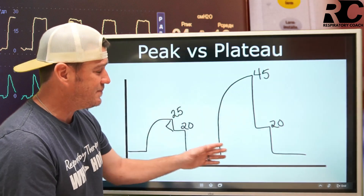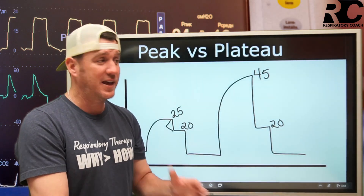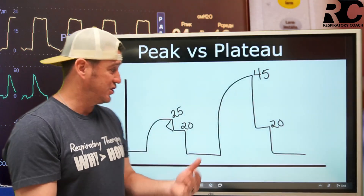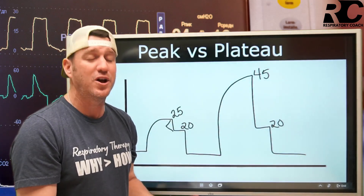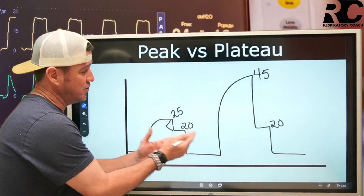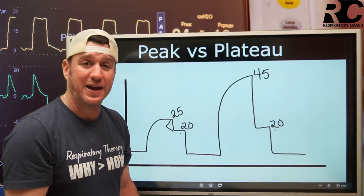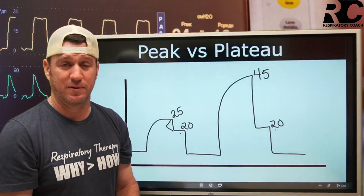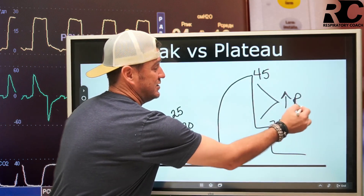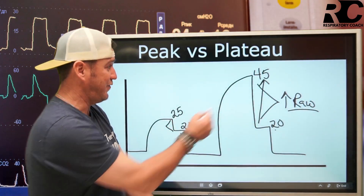If you find this with your patient, you have to think: let me assess more than one data point. Someone says PIPs were 25 and now they're 45 — you have no idea what needs to be done until you know your plateau pressures. They were 20 and they're still 20. That tells me this is not an alveolar compliance problem — this is an airway resistance problem. Because of this big gap, there's an increase in airway resistance causing peak pressures to go from 25 up to 45.